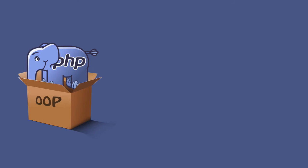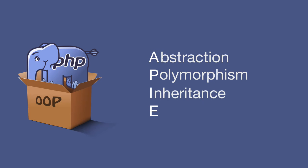Within object-oriented programming, we have an acronym that is APIE. This acronym stands for abstraction, polymorphism, inheritance, and encapsulation. You may be wondering what APIE is and what these four ideas, these philosophies within object-oriented programming, are. Well, over these next few lectures, you will learn about every single idea listed here.